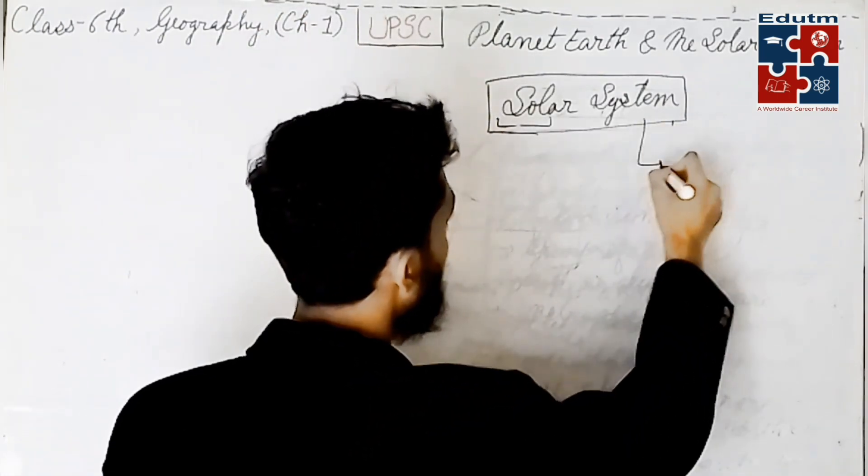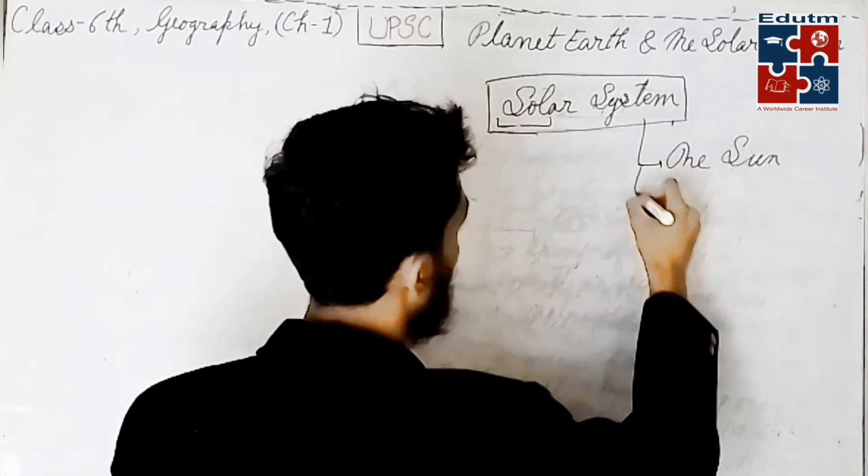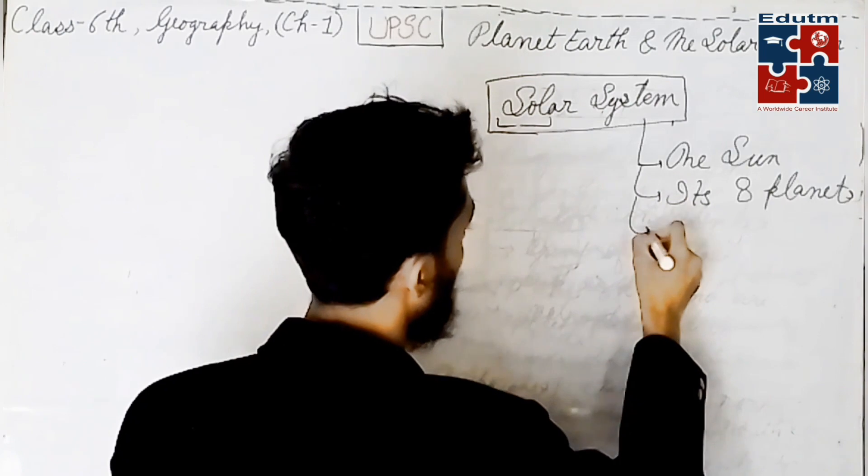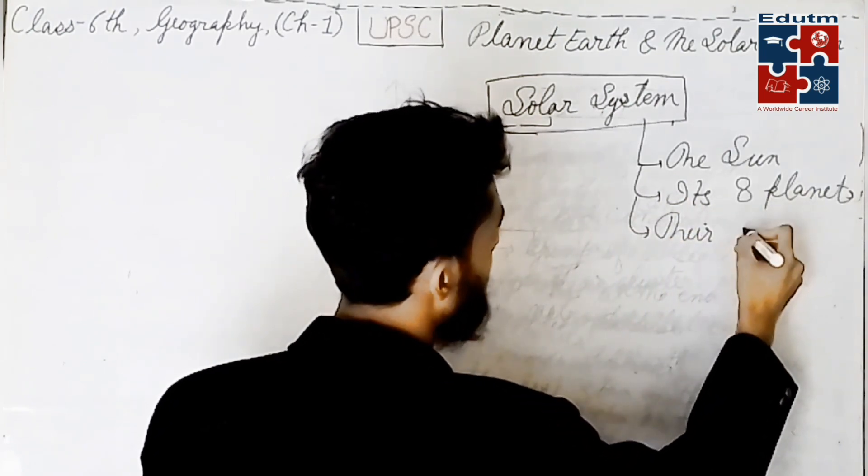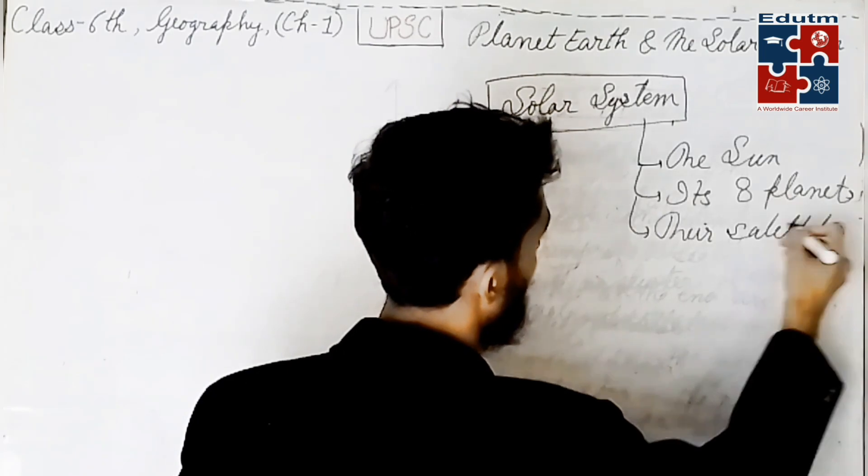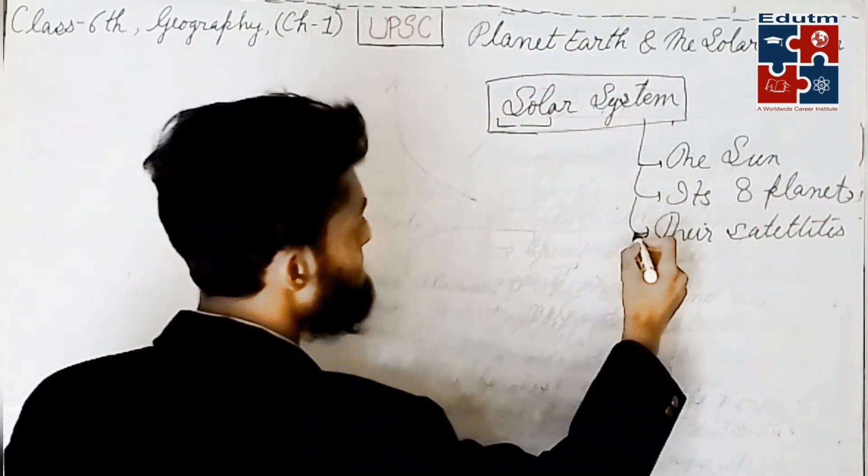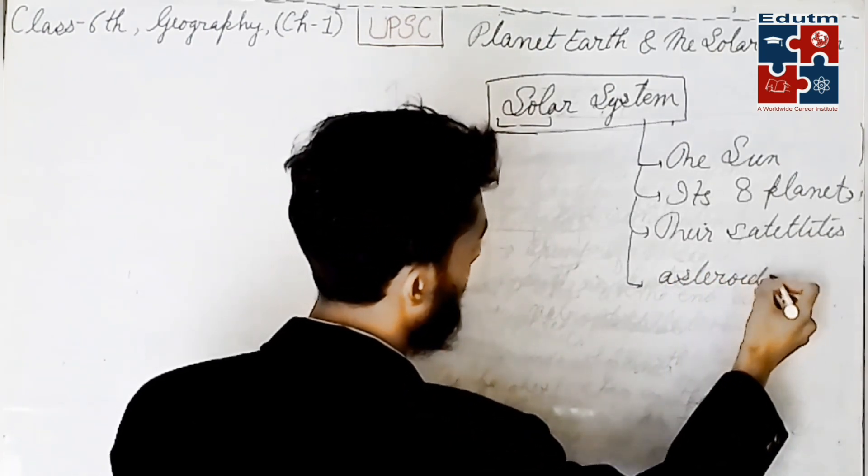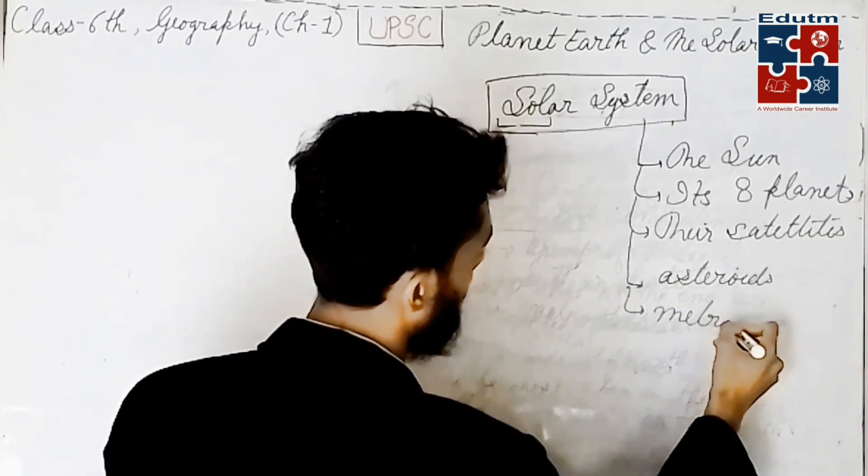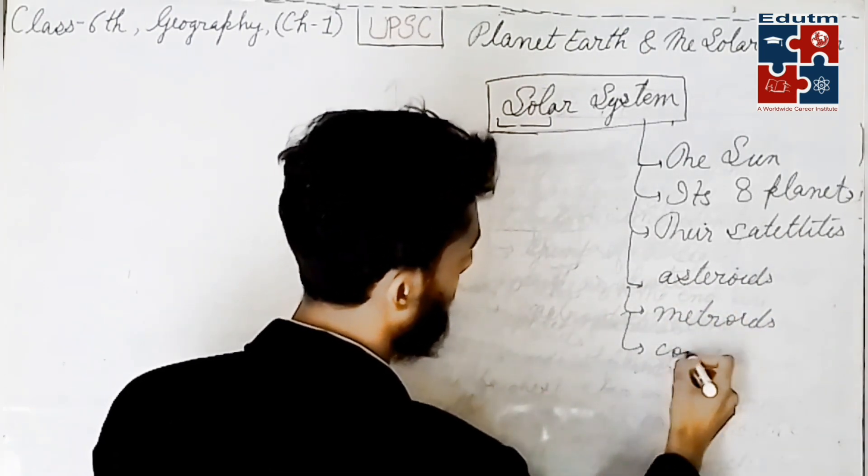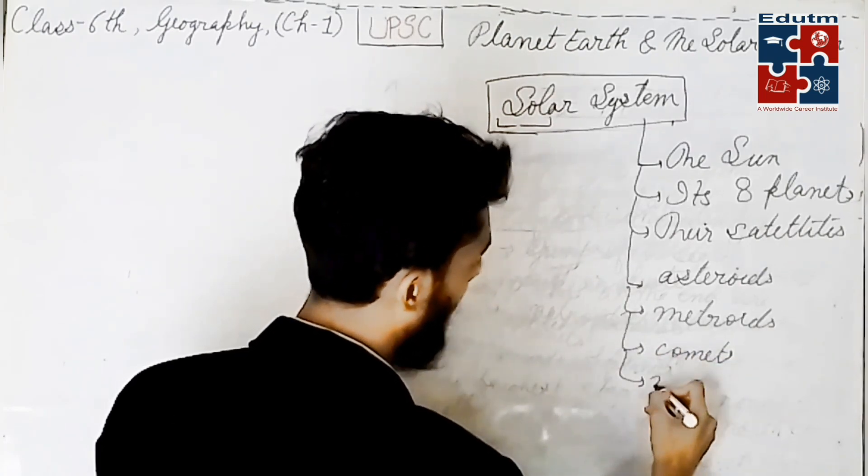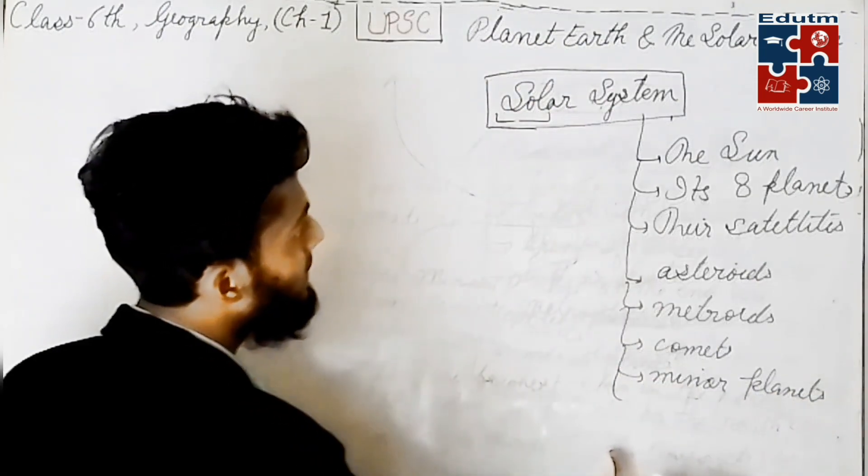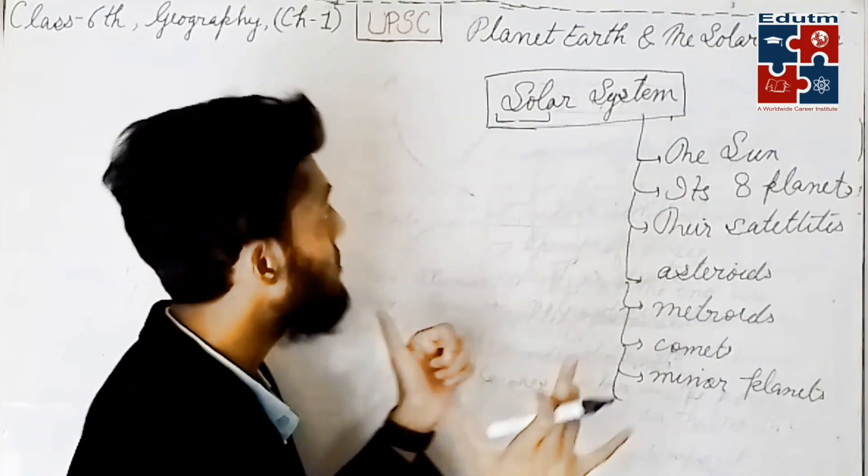The solar system comprises the sun, its eight planets, their satellites, and other heavenly bodies just like asteroids, meteoroids, comets, minor planets. So this everything makes up the full system, and this system is known as the solar system.